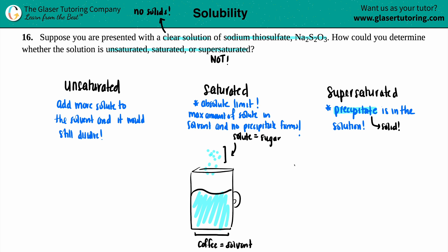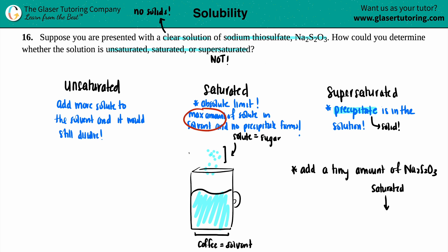To identify whether this is an unsaturated or saturated solution, we check if we're at the absolute limit. We can just add a tiny bit more Na₂S₂O₃. If this was a saturated solution, you already had your maximum amount, so that tiny bit is going to form a precipitate and you will now be in a supersaturated solution — a precipitate will form.